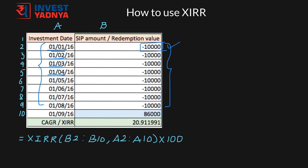And in the last row, put your redemption date along with the redemption value. The redemption value would be positive as it is an inflow now. And in the cell below, put this XIRR formula, which would give you the internal rate of return or CAGR on your investment.